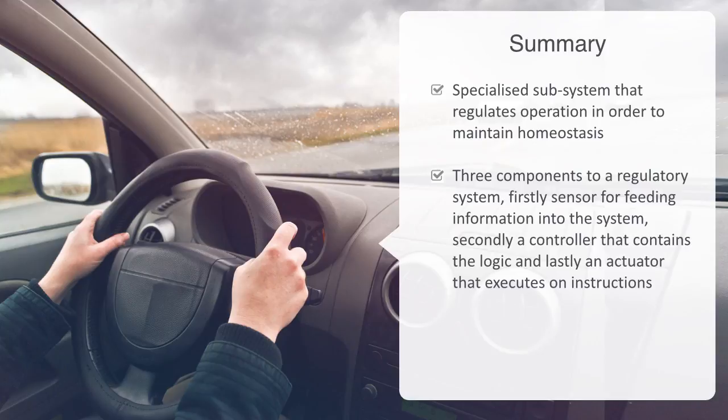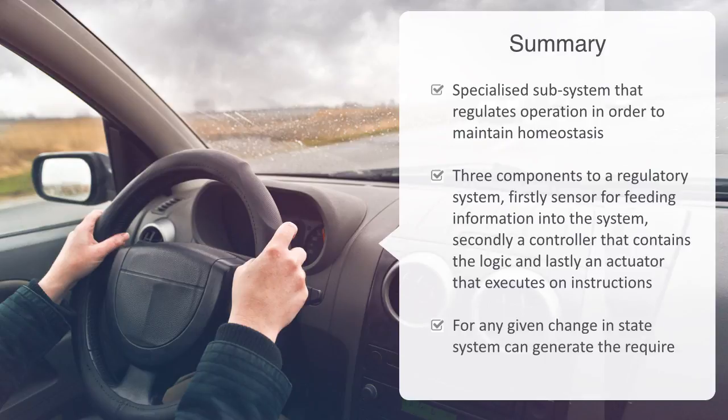Lastly, we talked about what it required for a system to be self-regulating, where for any given change in state presented by its environment, the system can adapt by generating a response required to maintain itself with its homeostatic parameters.